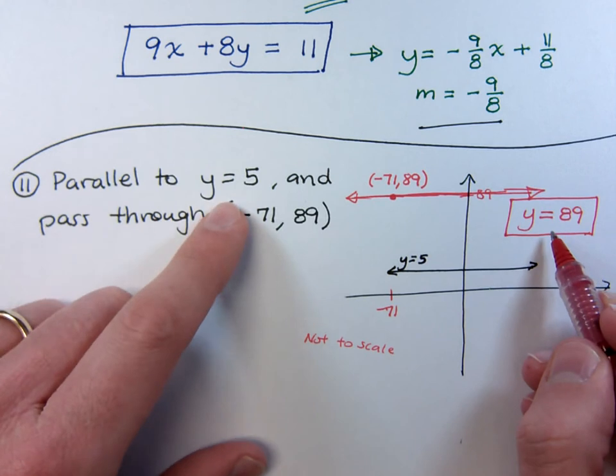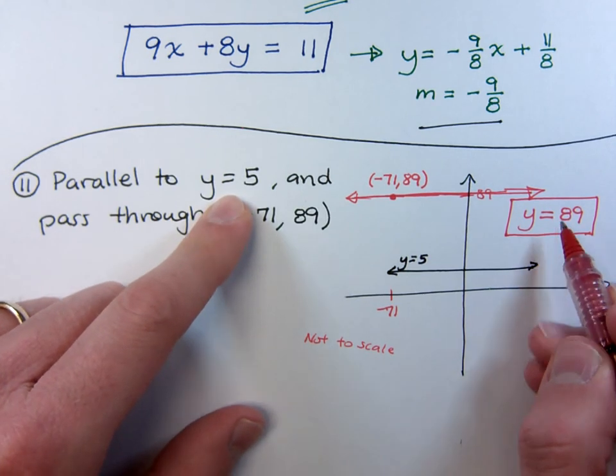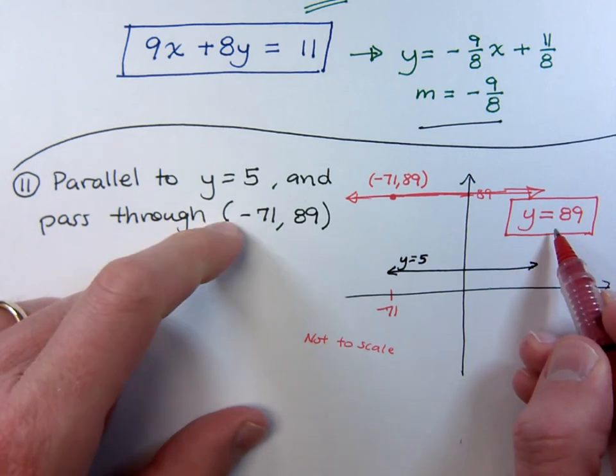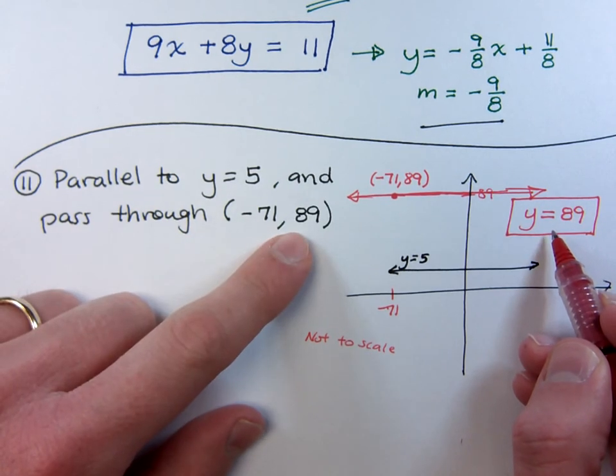Are these guys parallel to each other? Yes, they're both horizontal lines. And will this line right here go through the point negative 71, 89? Of course it does.